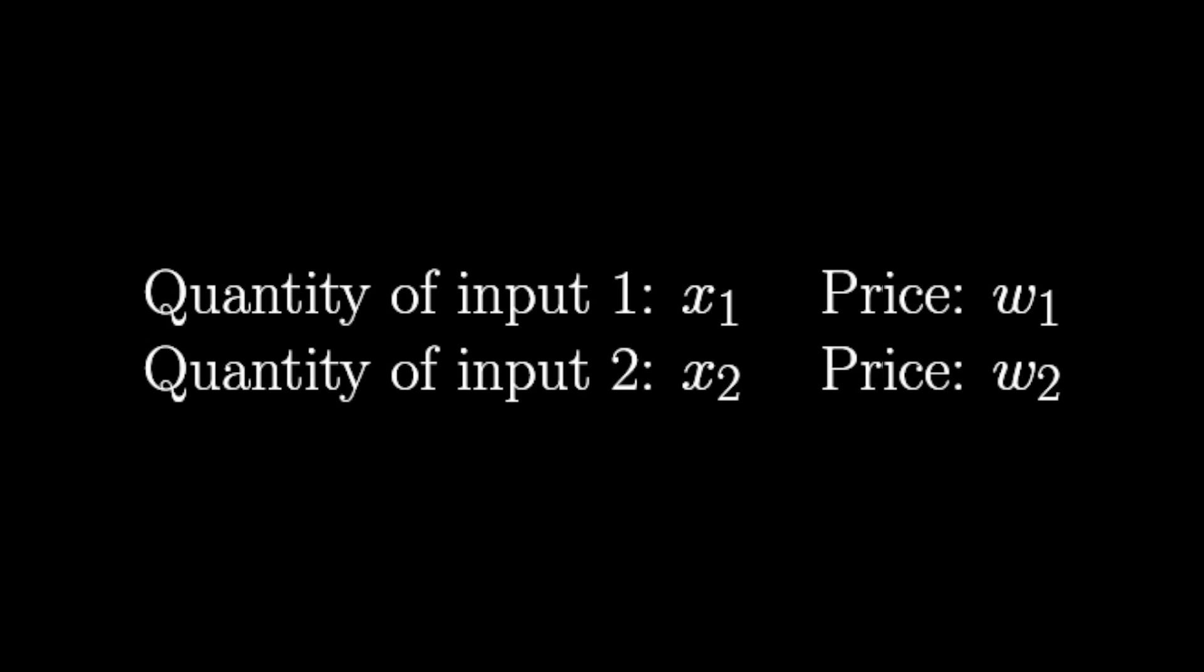To simplify the calculations here, we're only going to look at two different inputs, although the things we use here can really be generalized to include many more. Since the firm is trying to minimize their costs, we should probably find out how much money the firm is going to be spending if it's going to buy a certain combination of inputs. We can find the total cost function, c.